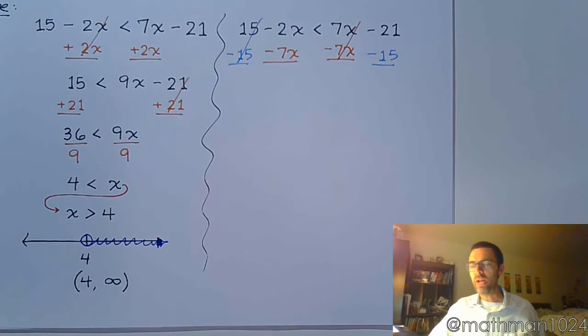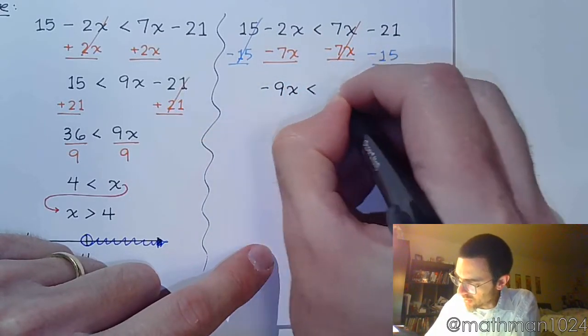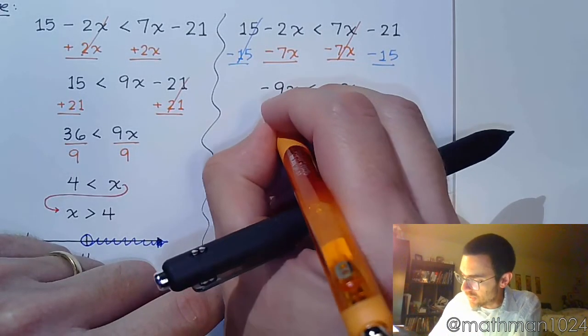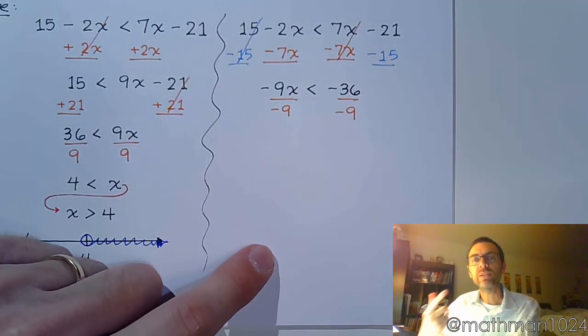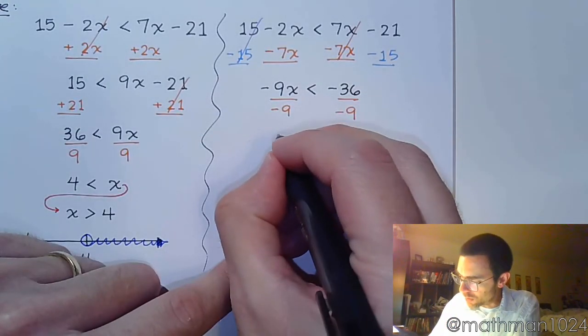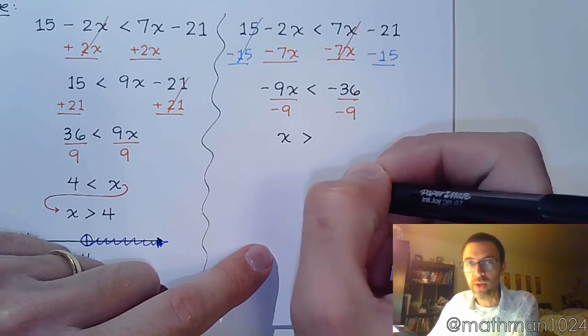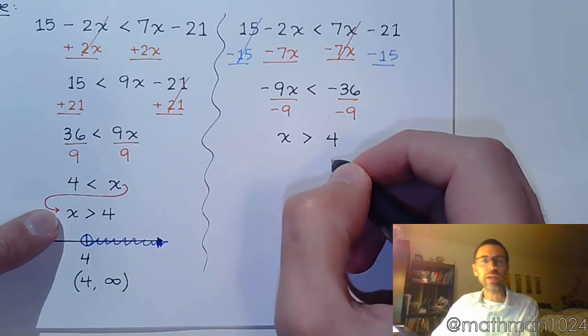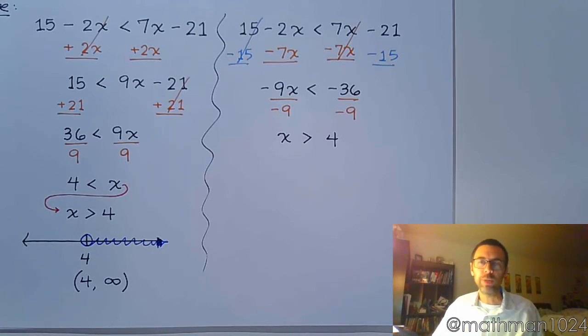A lot of negatives here, but I am not dividing or multiplying times a negative, so it should still be good. This gives me negative 9x is less than negative 36. The last step that I take to get x by itself is to divide both sides by negative 9. And it's here that I am now dividing by a negative, which means this inequality is going to go from being less than to greater than. Negative divided by negative is positive, so we have positive 4, and that's the same answer that I have right here, which means it's going to have the same graph and the same interval notation.